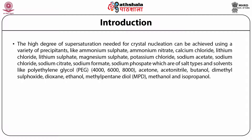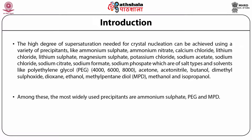The higher degree of supersaturation needed for crystal nucleation can be achieved using a variety of precipitants such as ammonium sulfate, ammonium nitrate, calcium chloride, lithium chloride, lithium sulfate, magnesium sulfate, potassium chloride, sodium acetate, sodium chloride, sodium citrate, sodium formate, sodium phosphate — which are salt types — and organic solvents like ethylene glycol (PEG 4000, 6000, 8000), acetone, acetonitrile, butanol, dimethyl sulfoxide, dioxane, ethanol, methyl pentanediol (MPD), methanol, and isopropanol. Among these, the most widely used precipitants are ammonium sulfate, PEG, and MPD.